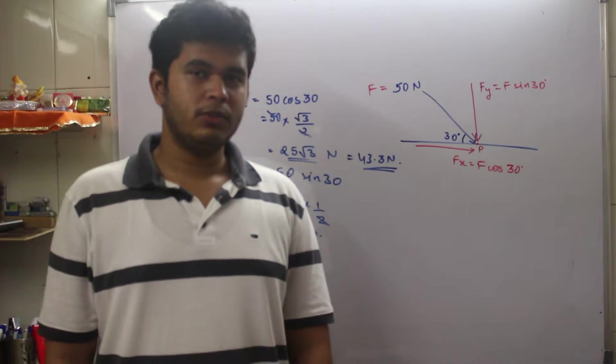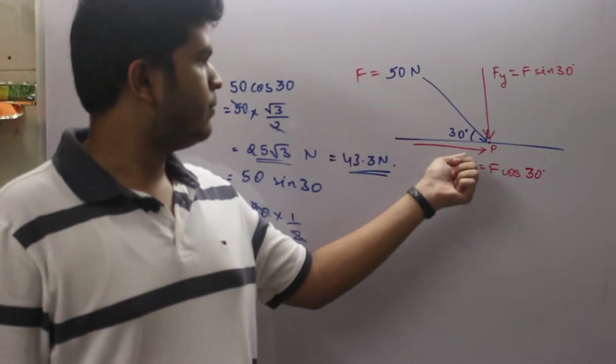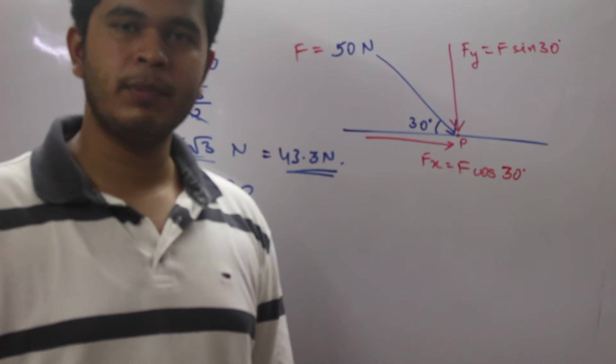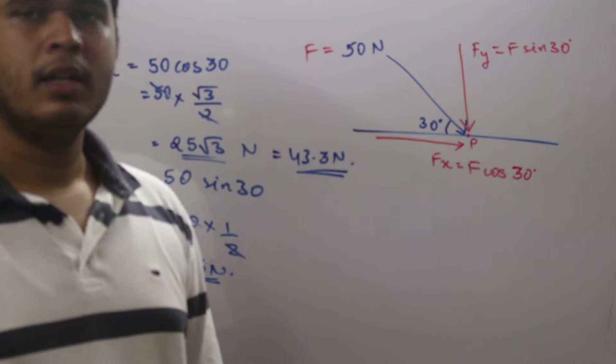Let's take an example about resolution of forces. Consider a horizontal surface. A force F of 50 Newtons is acting diagonally at an angle of 30 degrees with respect to the horizontal acting on point P. Let's resolve this into F_x and F_y.